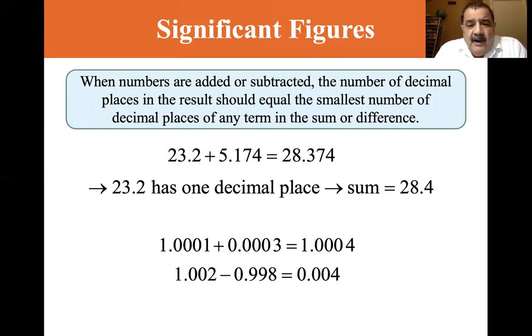Here you have four decimal places here, four decimal places here. So you can keep the 1.0004. Here you have 1.002 minus 0.998. Each of these has three decimal places. And so you can keep the three decimal places .004.